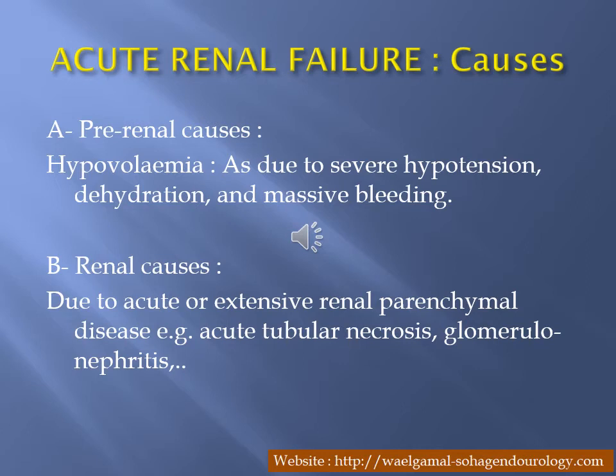The renal cause includes acute extensive renal parenchymal disease, acute tubular necrosis, and glomerulonephritis. This is important in predisposed cases like diabetes and hypertension. The kidney is liable for damage with massive or prolonged analgesic administration. All these can lead to acute renal failure at the renal level.